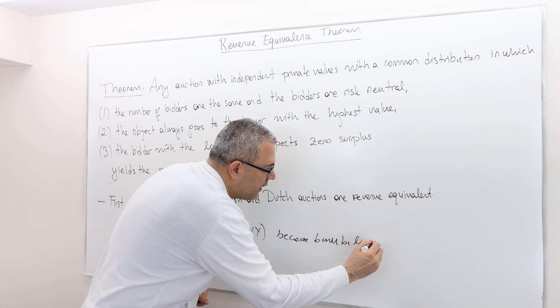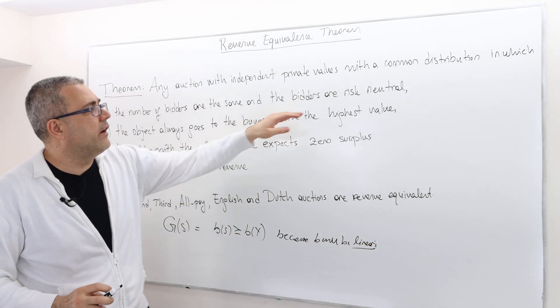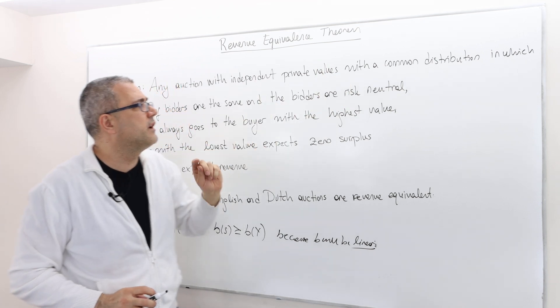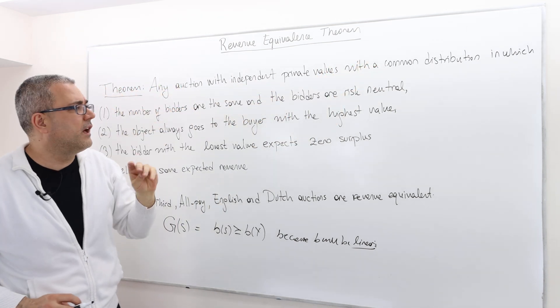And the linearity is actually guaranteed when we have risk neutrality. That's very important, the common distribution, the independent private values, etc.